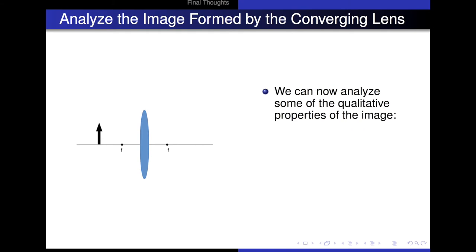So we can analyze some qualitative properties now. First, the image is smaller in size than the object itself. Why is that? The magnitude of the magnification is less than 1, so it's a smaller image in size. Next, it's an inverted image. How do I know that? Well, M is less than 0, or it is a negative magnification. It's upside down. And finally, we know that it's a real image.